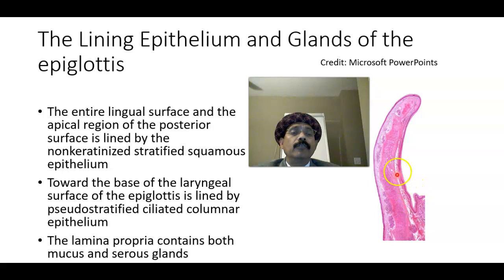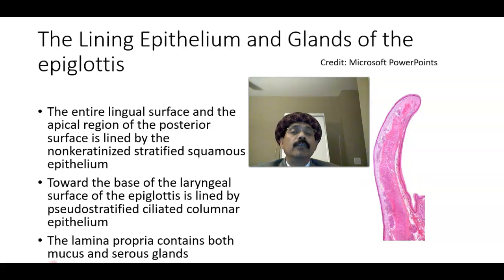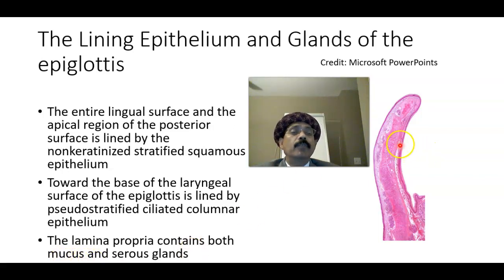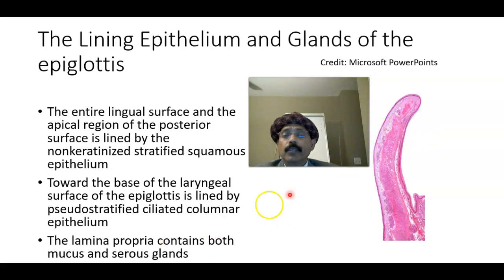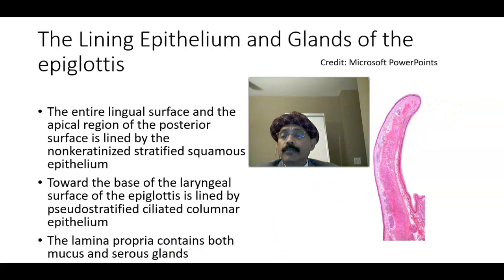The lamina propria contains glands — it may be mucous gland, serous gland, seromucous gland; there may be tubular and acinar glands. Taste buds are present on this side and may also be present on the other side. The lingual surface may also have taste buds, as on the laryngeal surface.